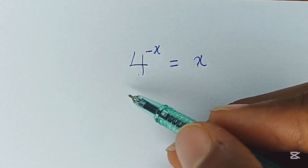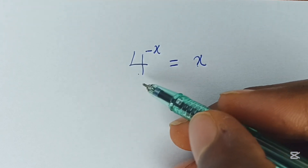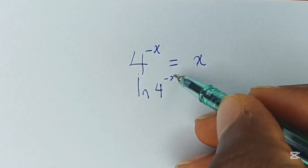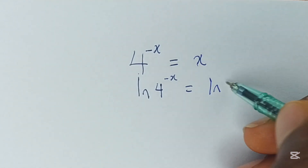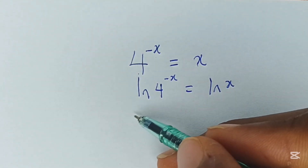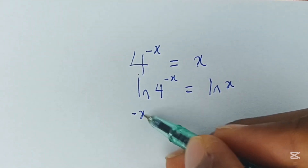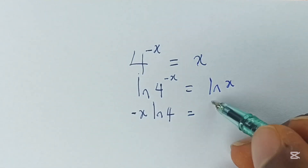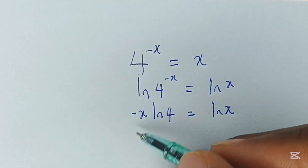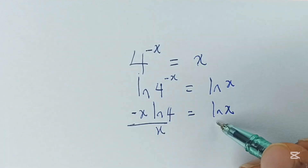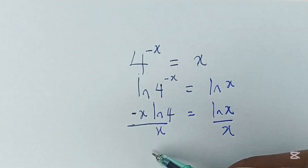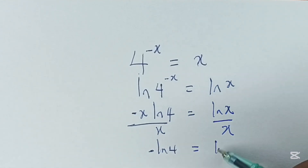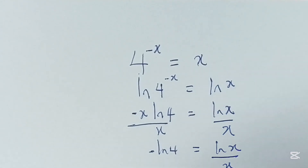The first thing to do here is that we can take the natural log of both the left and the right hand sides. We can have from here that this is now equal to negative x multiplied by ln of 4, to be equal to ln of x. Now let's divide both sides by x so that we have x on one side only.